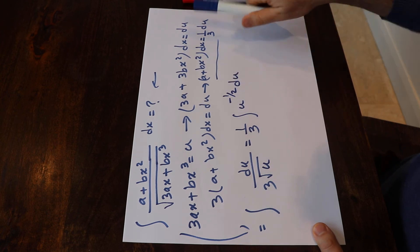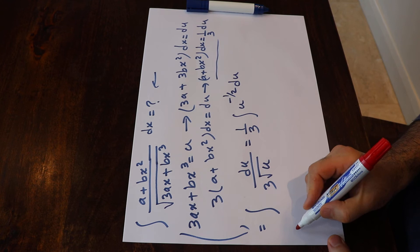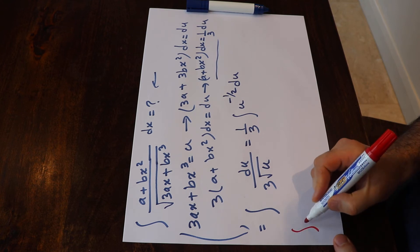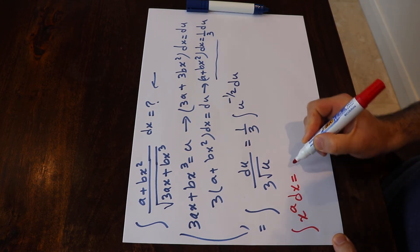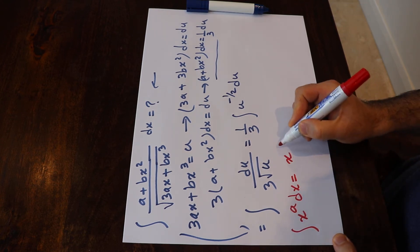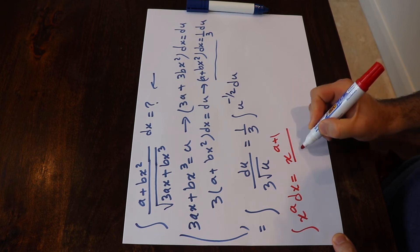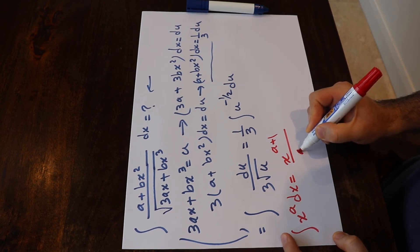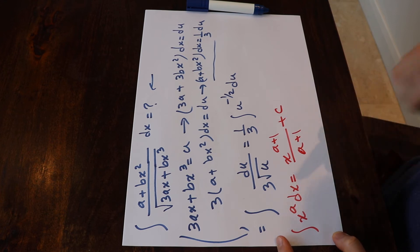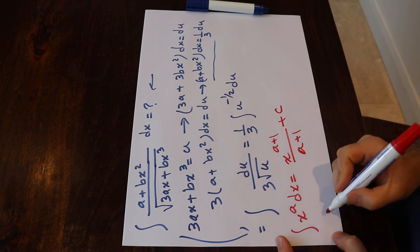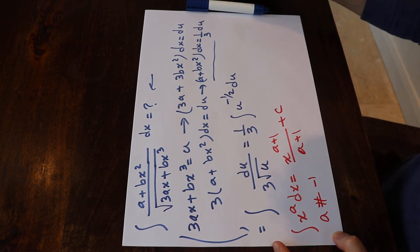To solve this integral, you need to know one formula: the integral of x to the power of a dx equals x to the power of (a + 1) divided by (a + 1) plus c, where c is the constant of integration, assuming a is not equal to minus 1.